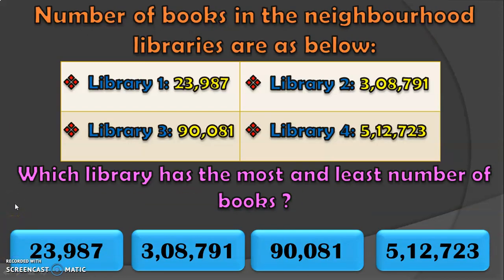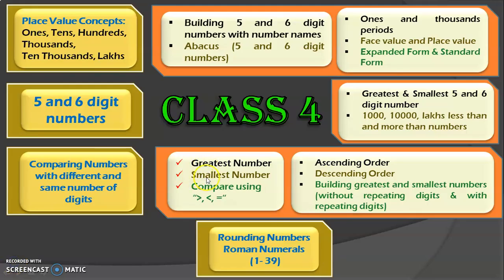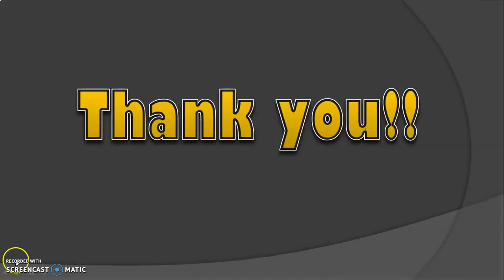Remember the library question from the beginning of the video? With the rules learned, the smallest number is 23,987 and the largest number is 5,12,723. Comparing numbers and finding the greatest and smallest number is covered in this video. Ascending order, descending order and building numbers will be covered in the next video. If you like the content, please click the subscribe button. Thank you.